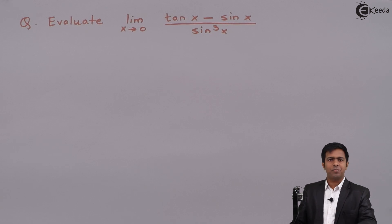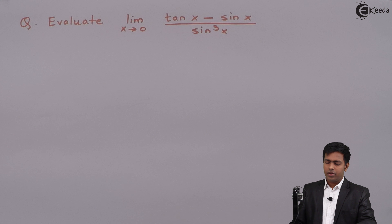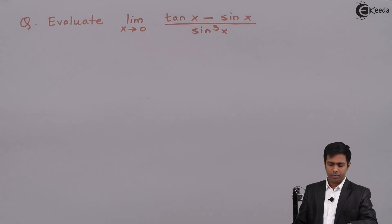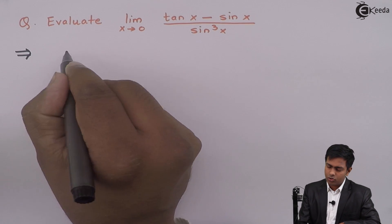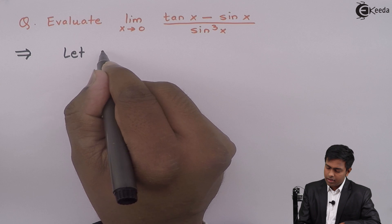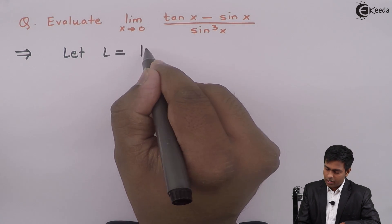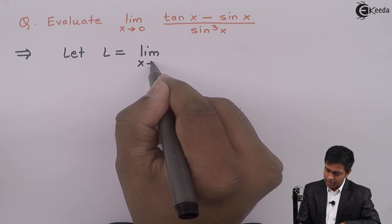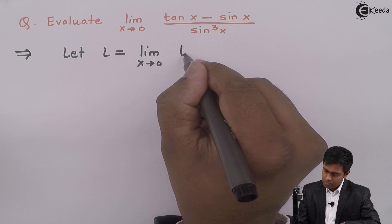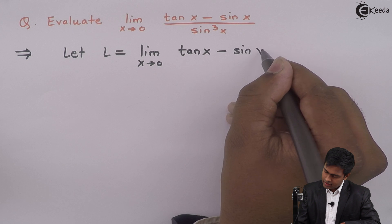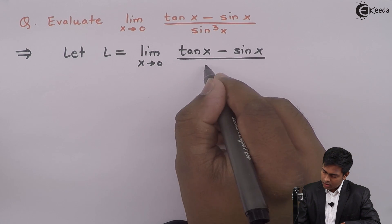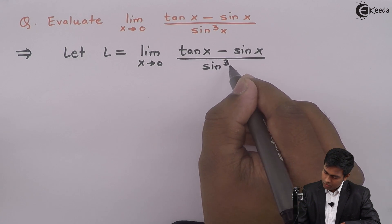Hello everyone. In this problem we have to evaluate the limit x tends to 0 of tan x minus sin x upon sin cube x. First of all I will assume the given limit as L. So let L equal to limit x tends to 0 of tan x minus sin x upon sin cube x.